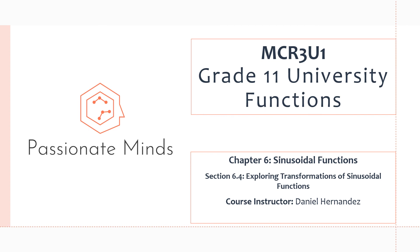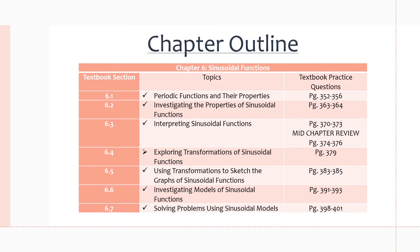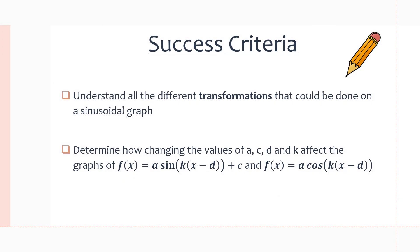Hello everyone, welcome back to another MCR3U1 video. Today we will be exploring transformations of sinusoidal functions in section 6.4. You can find some extra practice on today's topic on page 379. Here's the success criteria for this lesson: we want to understand all the different transformations that can be done on a sinusoidal graph and determine how the changes of the values of a, c, d, and k affect the graphs of f(x) = a·sin(k(x − d)) + c and the same thing with cosine.